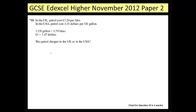Question 10. This is one of those really nasty questions that's very wordy and requires some thought. In the UK petrol costs £1.24 per litre. In the USA petrol costs $3.15 per US gallon. So we've got different currencies and we've also got different systems of measurement for capacity.